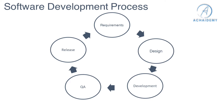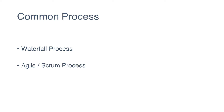This is a typical, foundational process of how software gets developed. Depending on which process you follow, each stage may take months or just days — for example, requirements alone might take two to three months in some cases. In this session, we'll focus on two processes: the Waterfall model and Agile/Scrum. Agile and Scrum are more common now, while Waterfall is the older, legacy process that was followed before Agile came in.